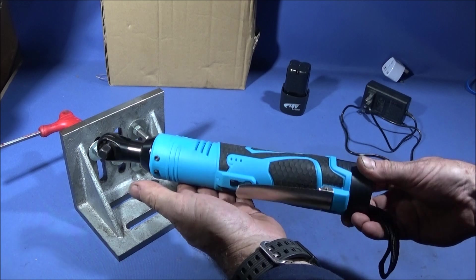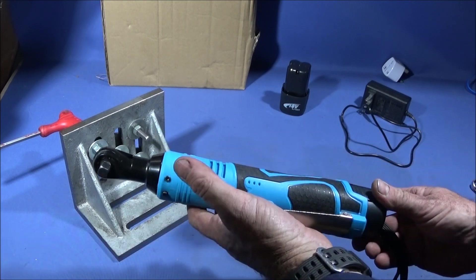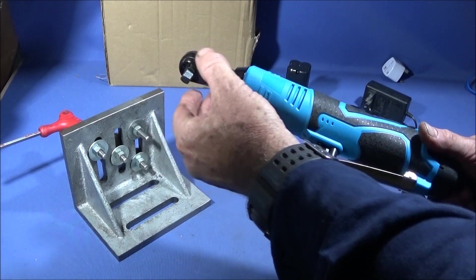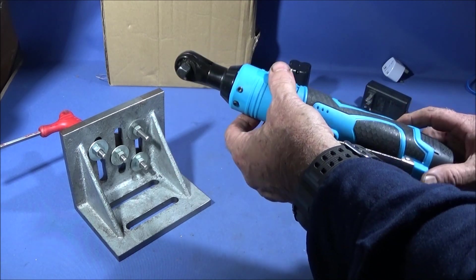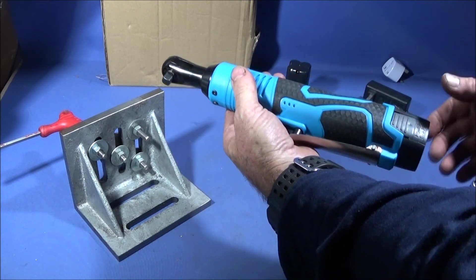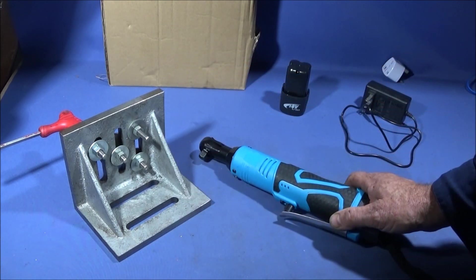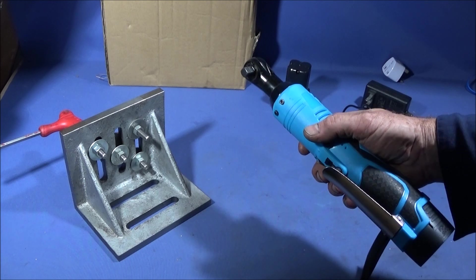I've got this excellent new tool to show you today and do a bit of a review on. It's a right-angled wrench, 3/8 drive, cordless electric, 18-volt lithium-ion battery, and it has a torque up to 60 Newton meters.